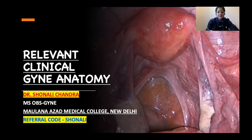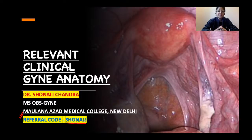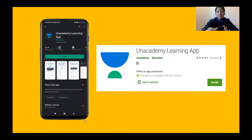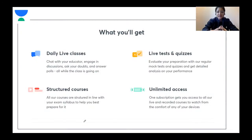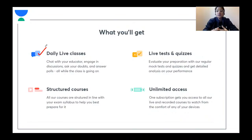I have highlighted my reference code here, that is S-H-O-N-A-L-I. If you take an Unacademy subscription you can avail this code to get a 10% discount on your subscription package. You can also download the Unacademy learning app to make your journey much easier, and you'll get daily live classes from the platform where you can chat with your educator, ask your queries and doubts, and get them solved there and then — it's like a live classroom experience.